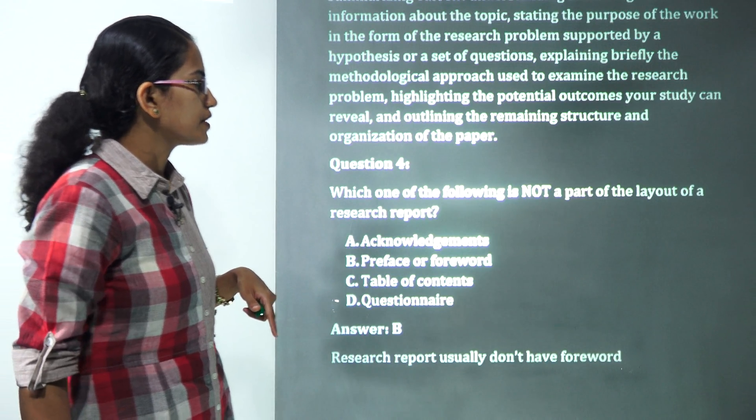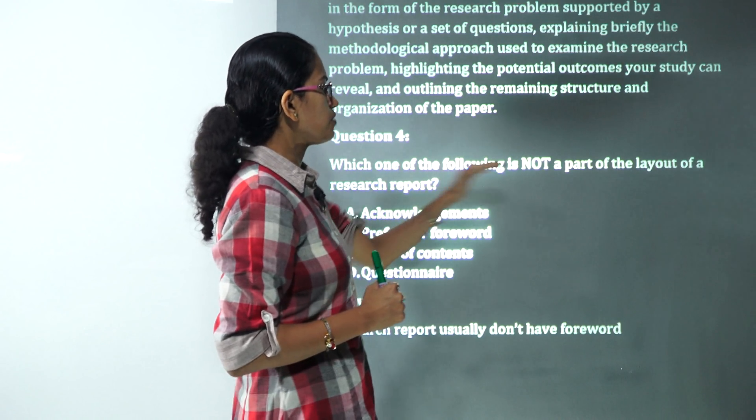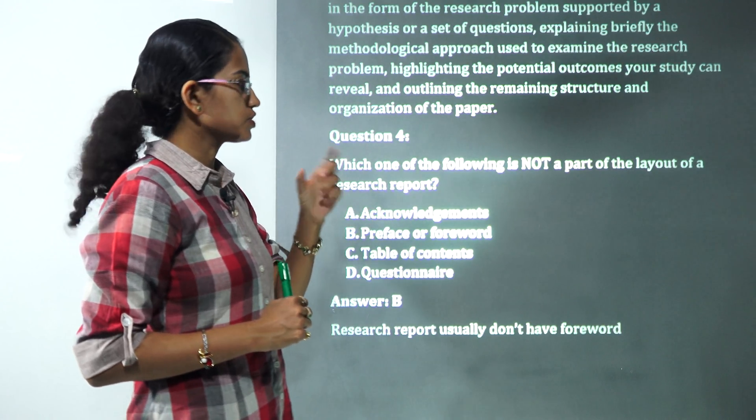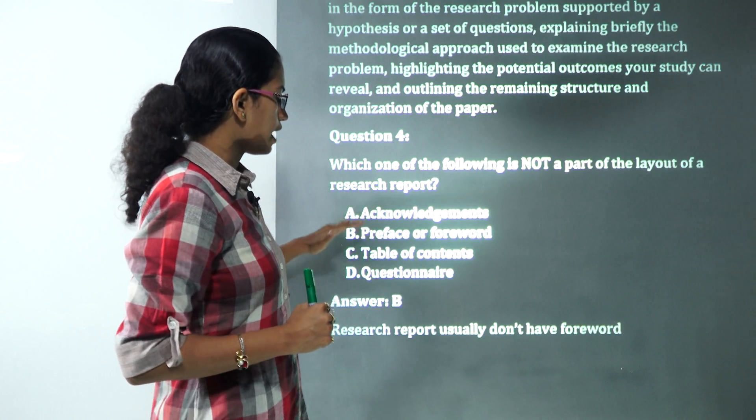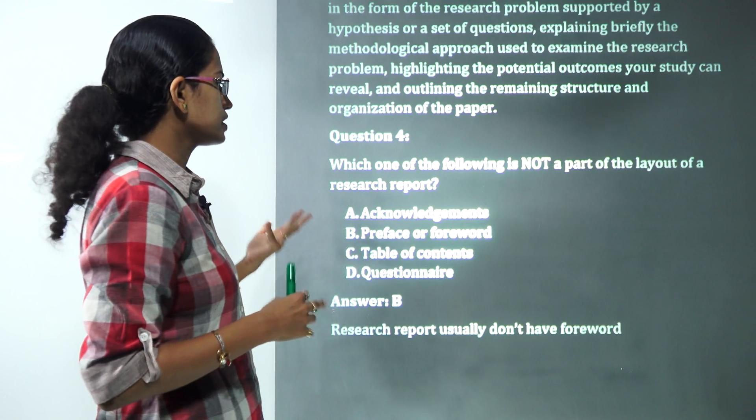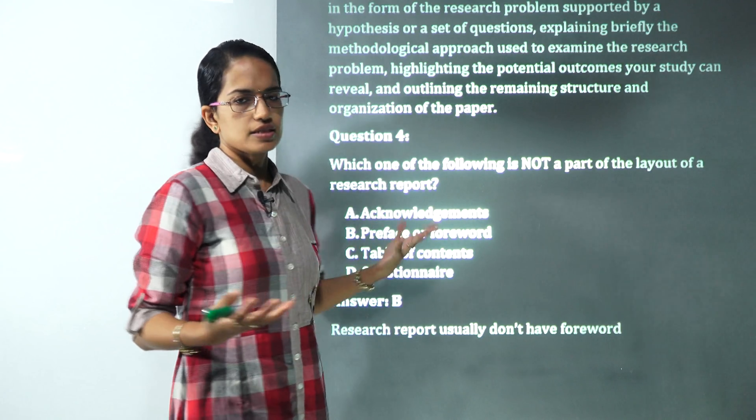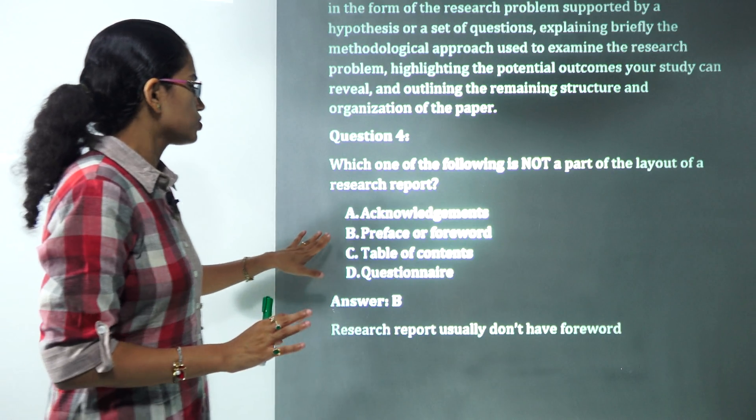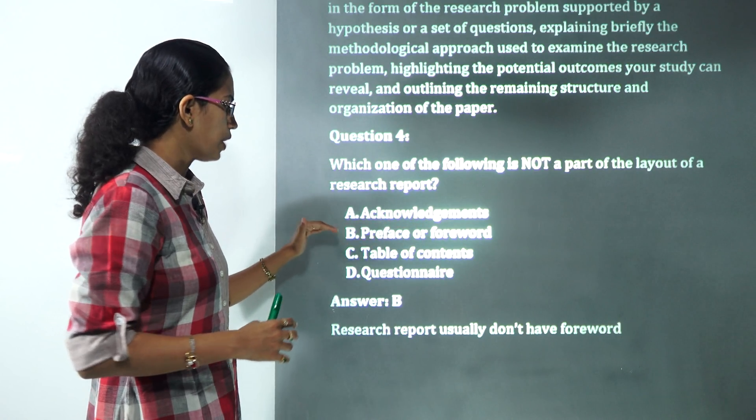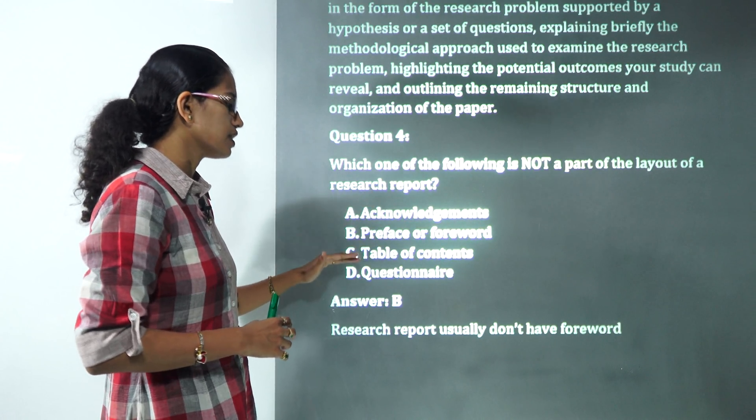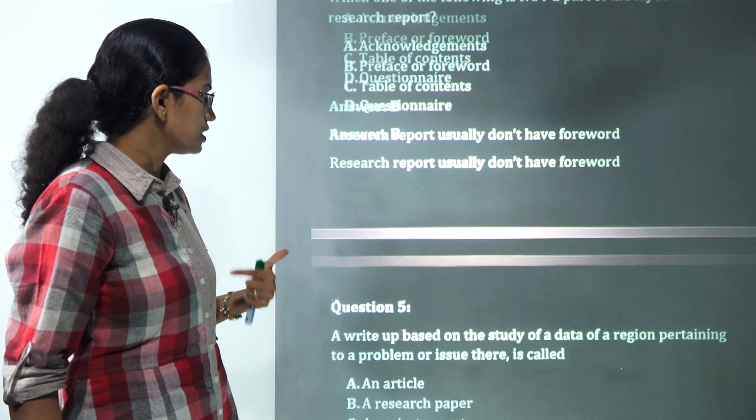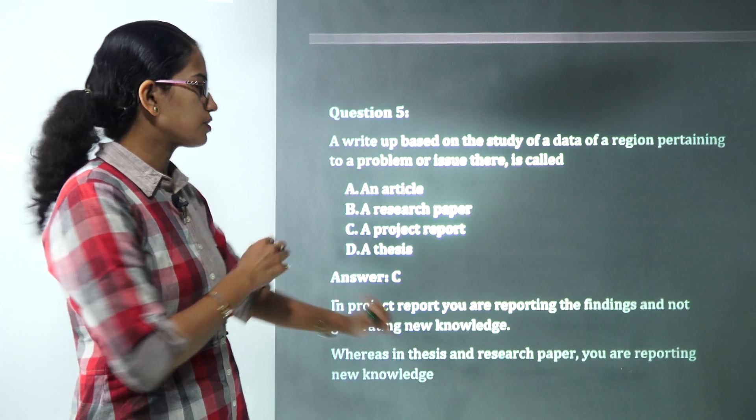The next question talks about, again, a very kind of controversial question. Which of the following is not a part of the layout of research report? Out of these, I could say preface or forward is basically usually not a part of a research report. You can have a research report totally without a preface or a forward. Forward is basically someone else explaining about you and your work. You have B as the choice here. Acknowledgement, table of content and questionnaires in basically appendix are usually seen in the research report. However, it's a kind of tricky question that was there.